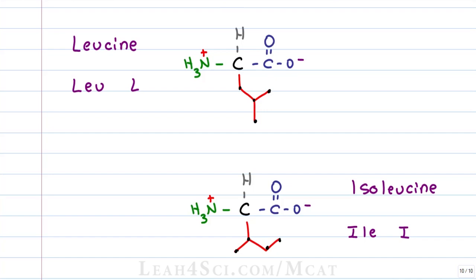Leucine which is LEU or L has an isobutyl side chain. Notice it has that isopropyl group that we saw on valine but with an added CH2 connected in between the isopropyl on the parent. This makes it not an isopropyl but an isobutyl side chain.